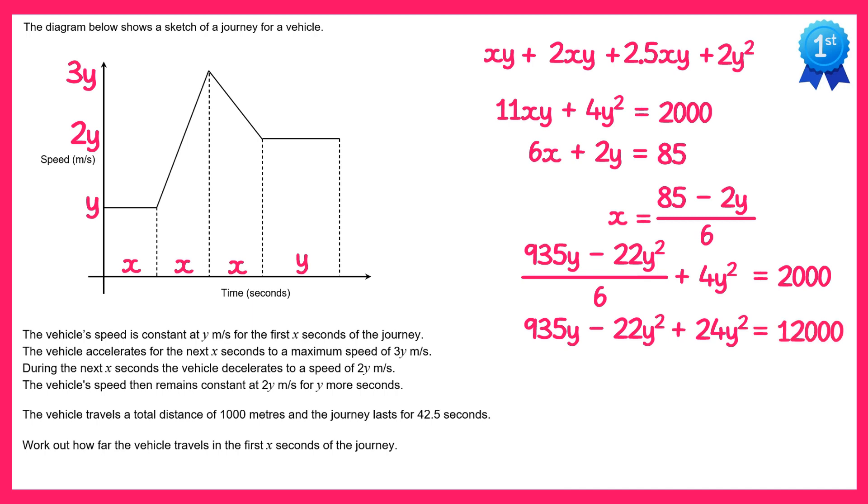This is a quadratic in terms of y. If you collect all terms on the left and simplify you end up with 2y squared plus 935y minus 12,000 equals 0.